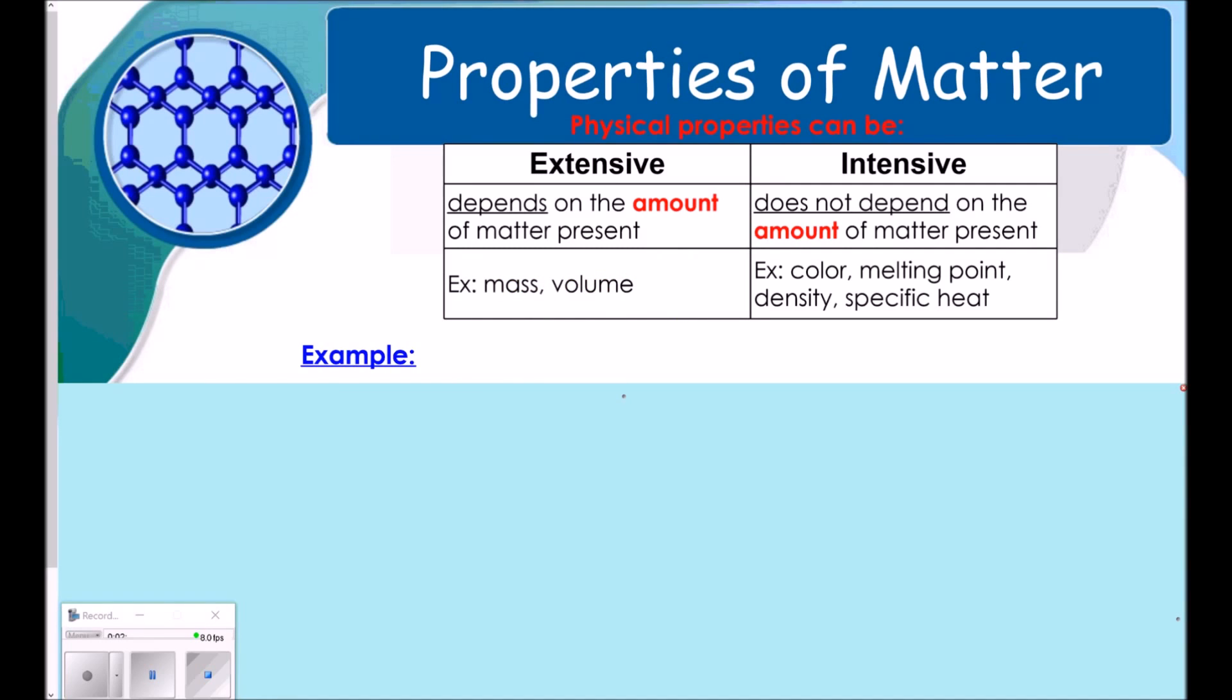Physical properties of matter can be extensive and intensive. Kids are typically pretty bad at knowing the difference. So, extensive depends upon the amount of matter present, meaning it changes with the amount. So, things like mass, one shoe being half a pound, two shoes being one pound, and volume, how much space it takes up, changes when you have more of it.